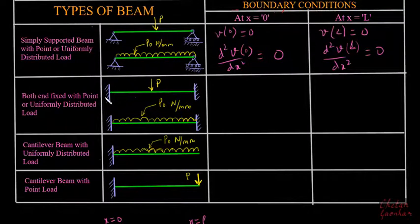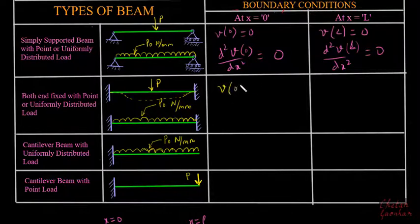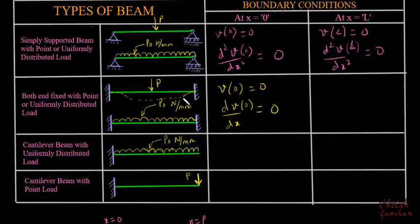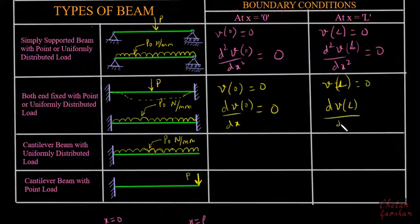For a beam fixed at both ends, the deflection and slope are zero at both supports. At x=0: v(0)=0 and dv/dx|₀=0. At x=L: v(L)=0 and dv/dx|_L=0. These four boundary conditions arise because a fixed end prevents both translation and rotation.